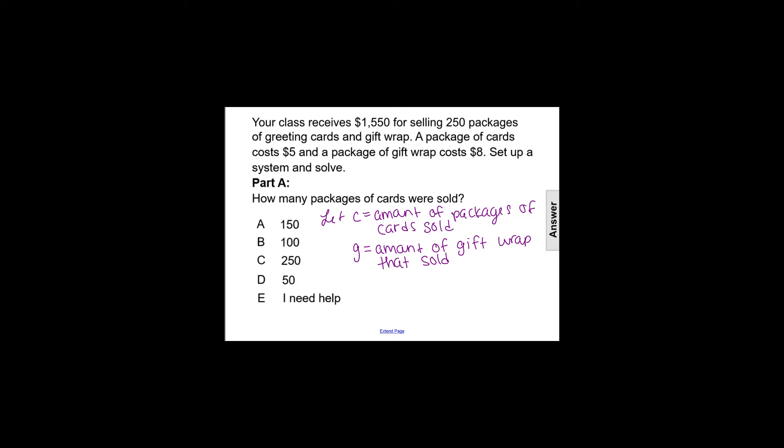Well, our system will come from the fact that your class receives $1,550 for selling the packages of greeting cards and gift wrap. So we need an equation that's going to work with the money aspect of the amount of packages of cards sold and the amount of packages of gift wrap sold. So we are going to have one equation is all about the money. So we have $5 is what the packages of cards sold, so that would be 5C, and $8 is the amount for a package of gift wrap, so that would be 8G, and we know if we add that, that would have a total of the money of $1,550. So our first equation is 5C plus 8G equals $1,550.